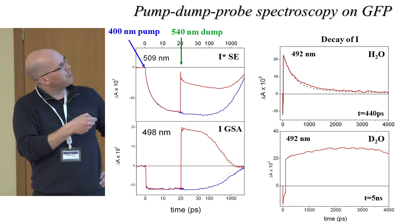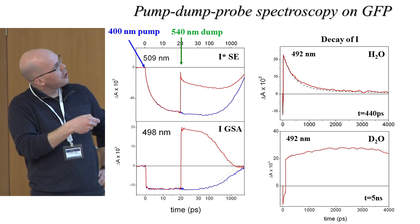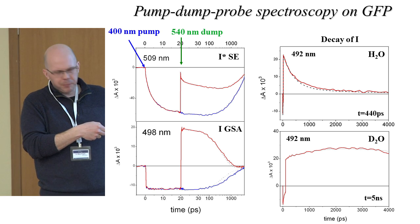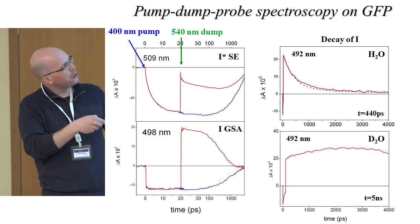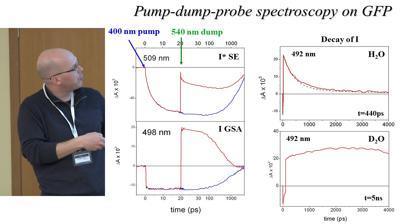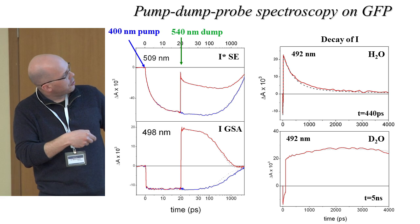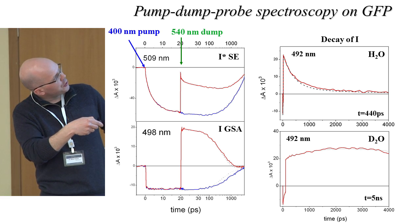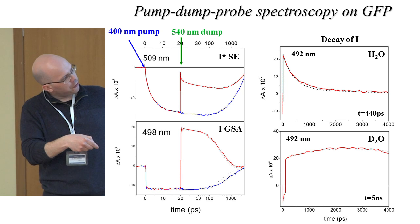We added a dump pulse once it had formed the proton-transfer excited state, removed all the excited state, and watched how the proton transfer takes place in the ground state — a very important biological reaction, since most metabolism is based on ground state proton transfer. What we saw: if you look at the stimulated emission bands, the emission grows in within about 20 picoseconds, then the second pulse arrives and much of this emission gets removed right away. At wavelengths a little to the blue from the emission, when the second pulse arrives a huge induced absorption appears. In H2O this absorption decays with a time scale of about 440 picoseconds; in D2O you can barely detect its decay within the nanosecond window.